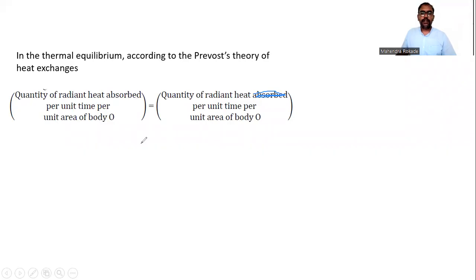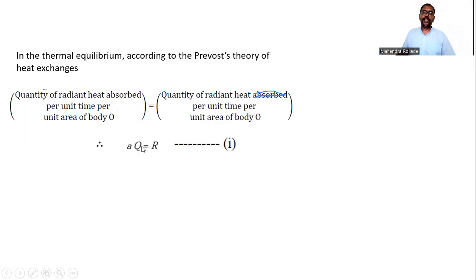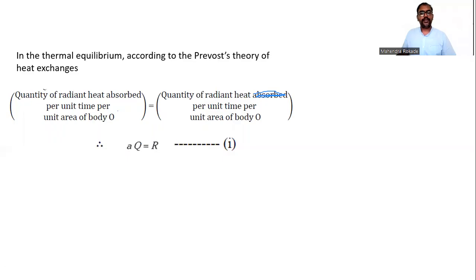Using the formula, heat absorbed per unit time per unit area is given by A·Q, where A is the coefficient of absorption and Q is the incident radiant heat energy. The quantity of radiant heat emitted per unit time per unit area is given by the emissive power R. So for body O: A·Q = R. This is equation one.